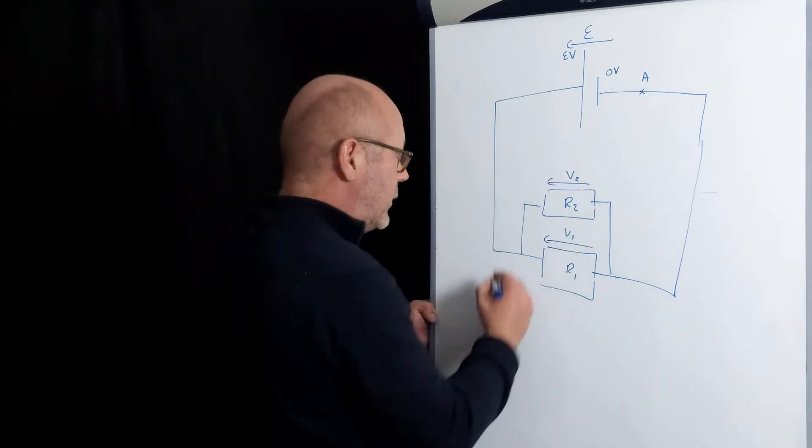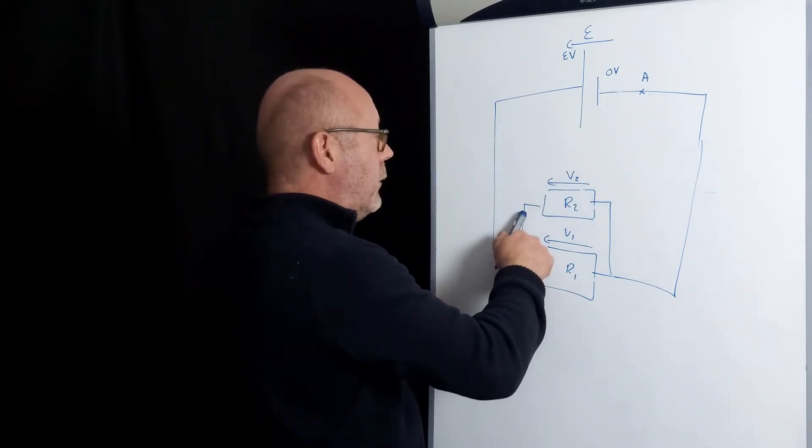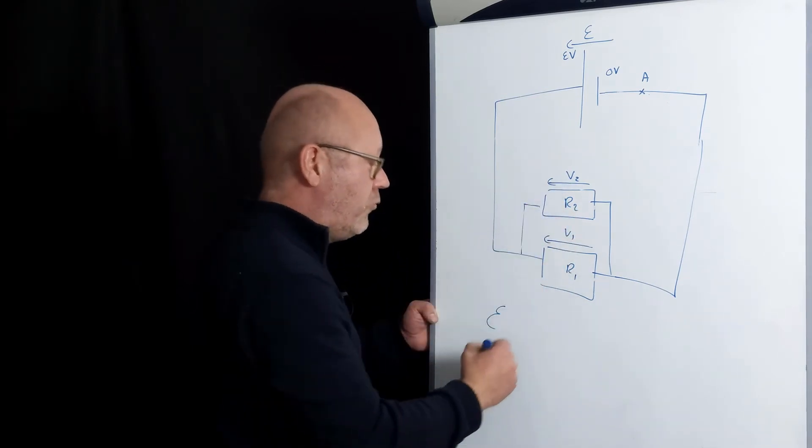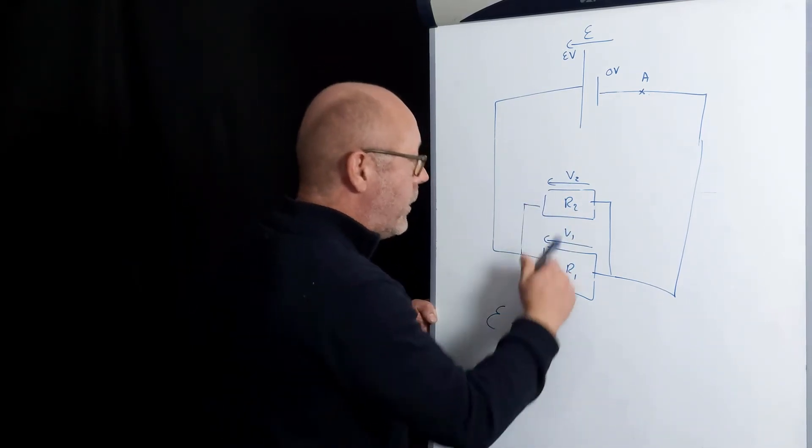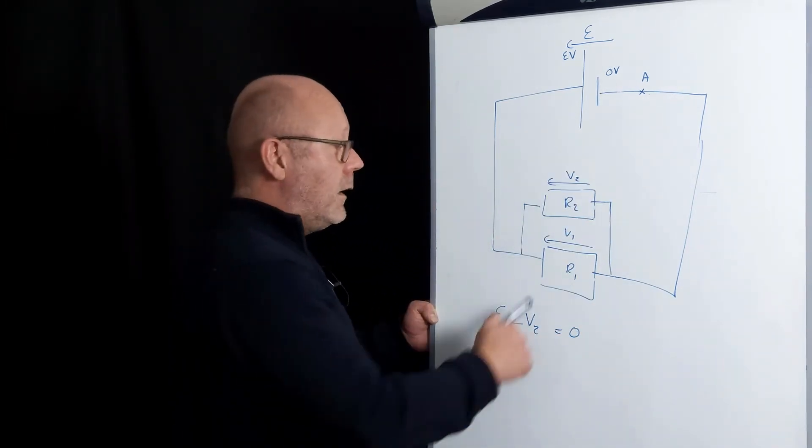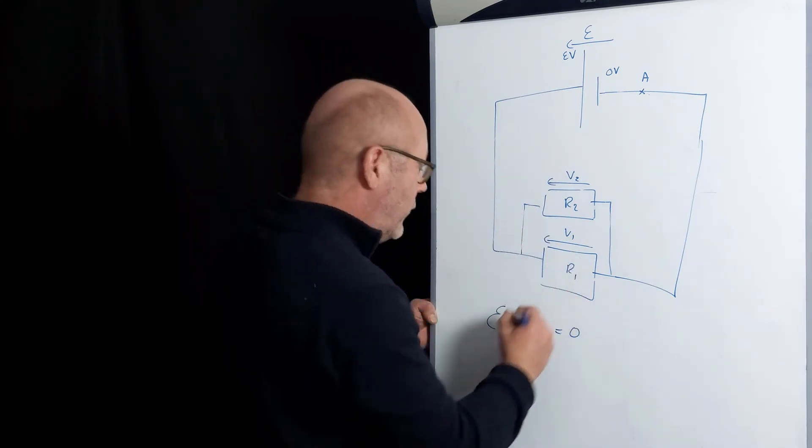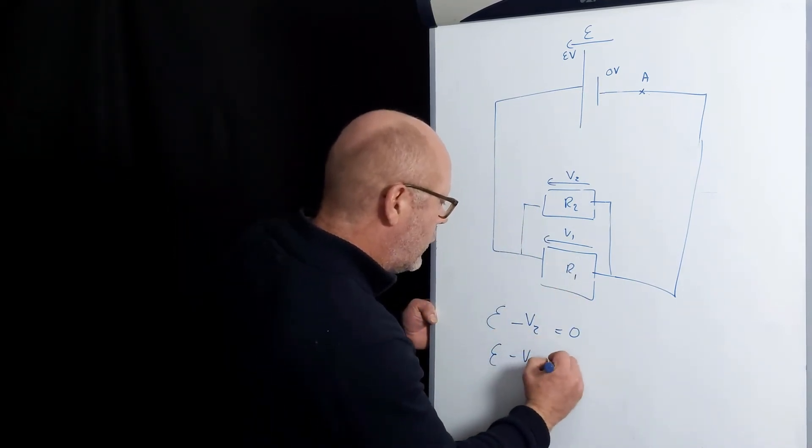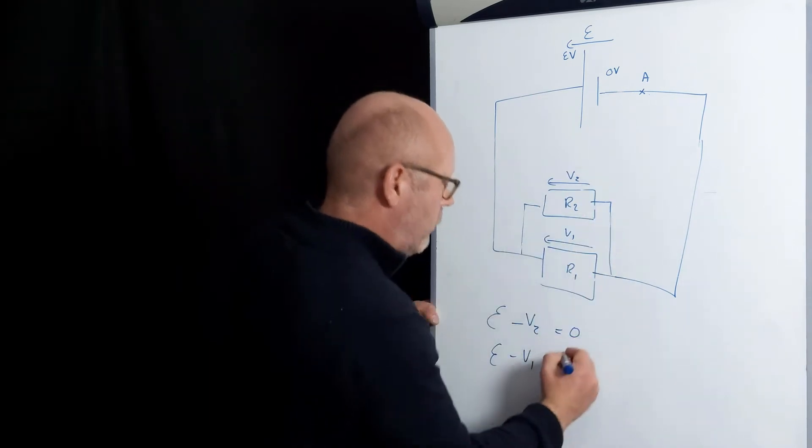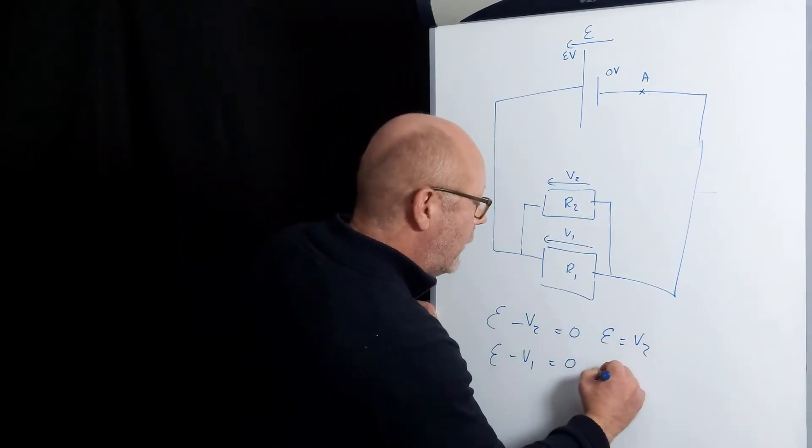Let's start from A. So we've got ε and travel along a loop. Here I've got a potential drop, so minus V2. And I'm back at A, zero. Let's do it also for this one. ε, minus V1. And I'm back at A, zero. So it means ε equals V2 and ε equals V1. So V1 equals V2.